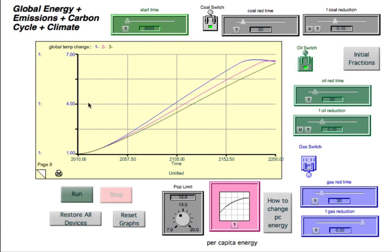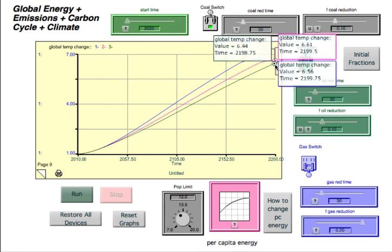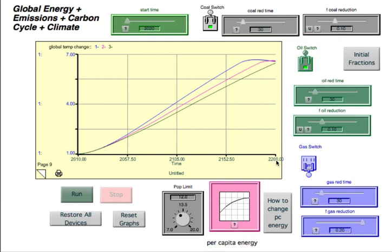Here's the global temperature change. And we will see that we have increased the temperature by about six and a half degrees by the year 2100. 2010 is our starting time here.